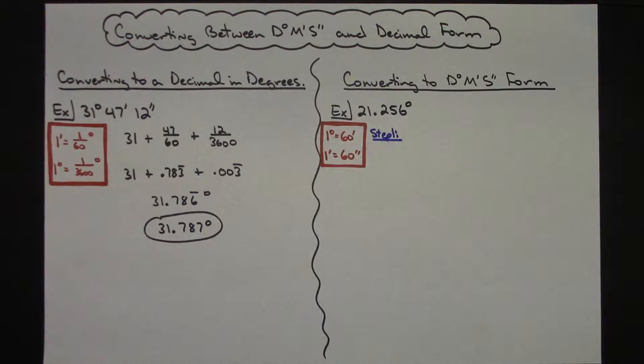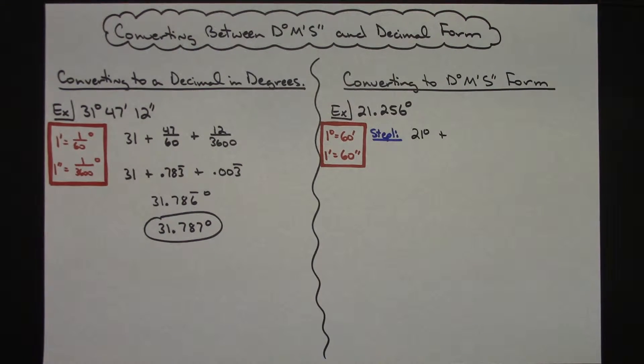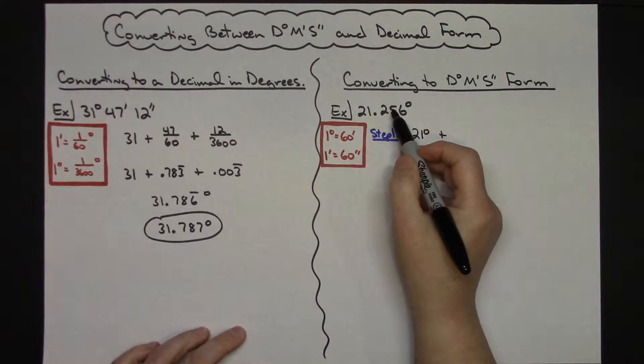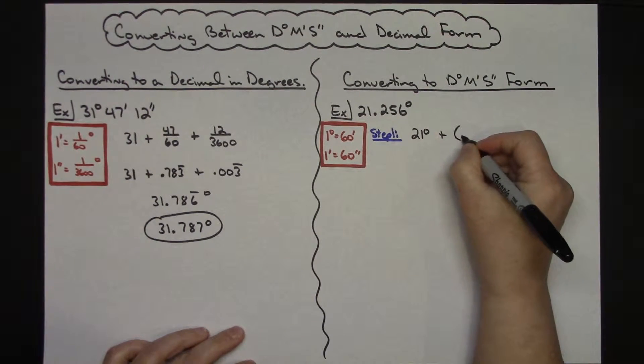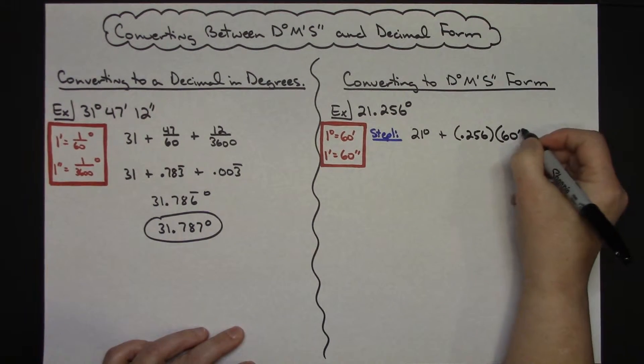So for step one, my 21 I know I have 21 degrees so I don't have to do anything with that. But I am going to add to that whatever this decimal turns out to be in minutes. So I'm going to take 0.256, that entire decimal, and multiply it by 60 minutes.